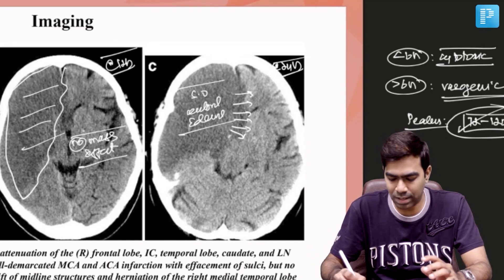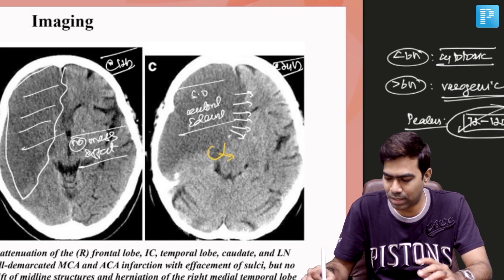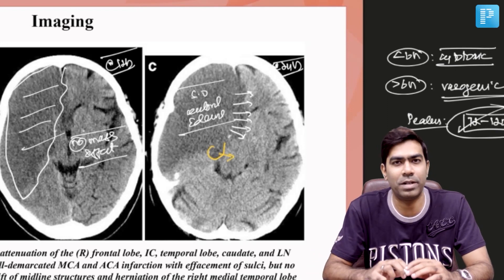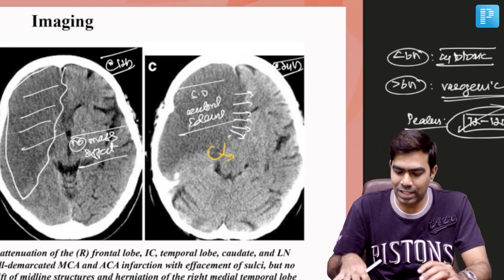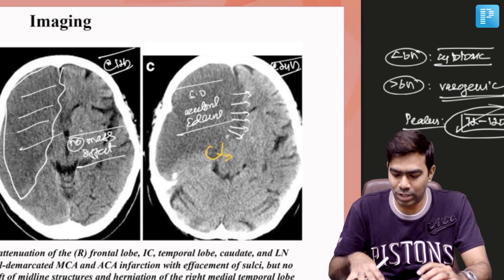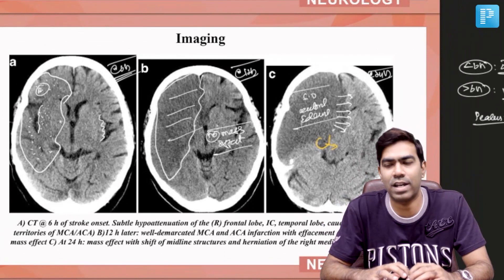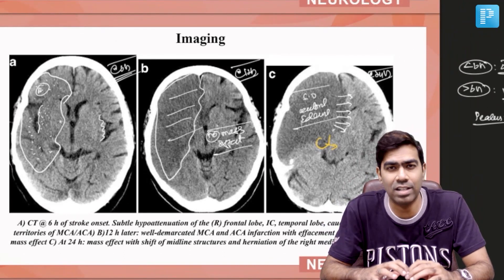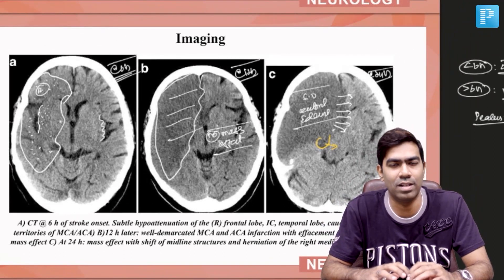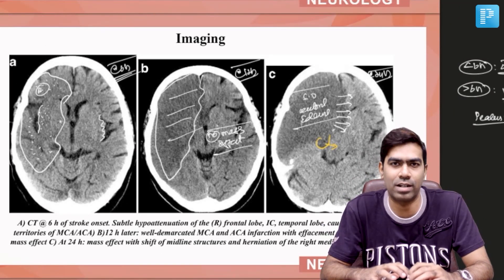At the same time, there is definite uncal herniation compressing the midbrain. This patient should definitely be taken for hemicraniectomy. Even though the prognosis and final neurological outcome may not be great, at least to save the patient you need to proceed with medical management and decompressive hemicraniectomy.